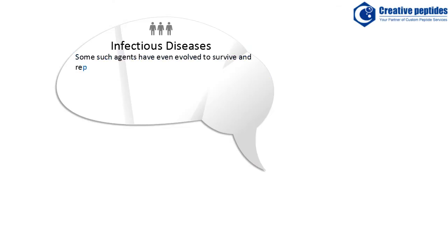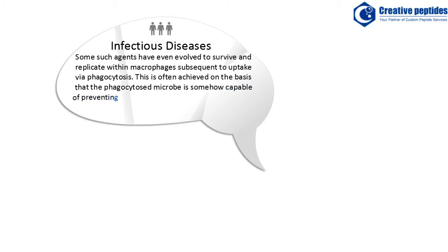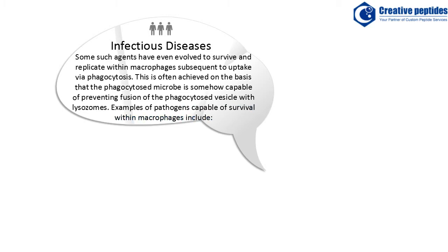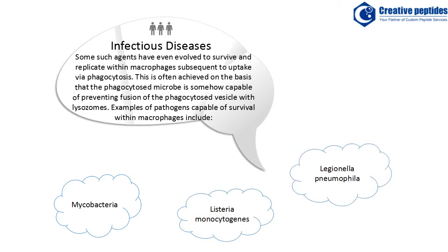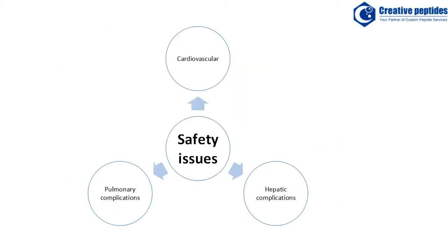Some pathogens have even evolved to survive and replicate within macrophages subsequent to uptake via phagocytosis. This is often achieved on the basis that the phagocytosed microbe is somehow capable of preventing fusion of the phagocytosed vesicle with lysosomes. Examples of pathogens capable of survival within macrophages include mycobacteria, Listeria monocytogenes, and Legionella pneumophila.